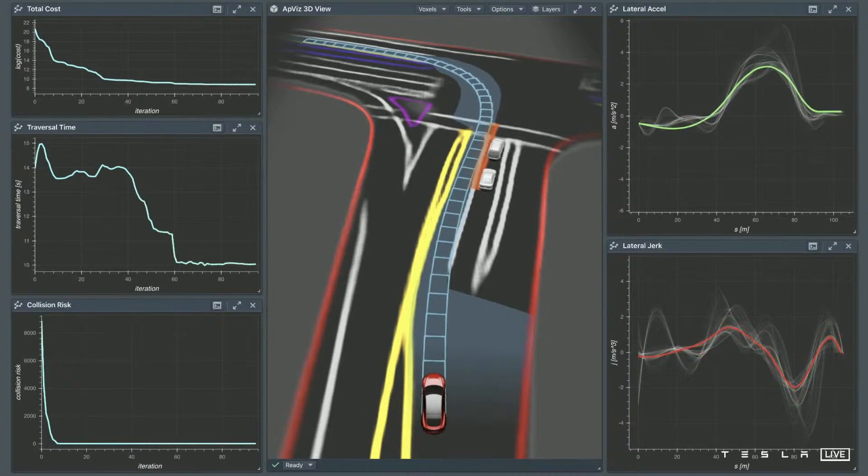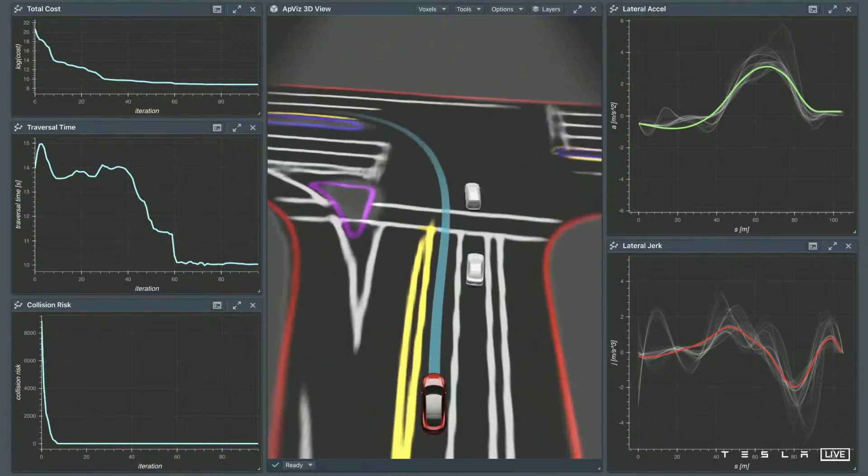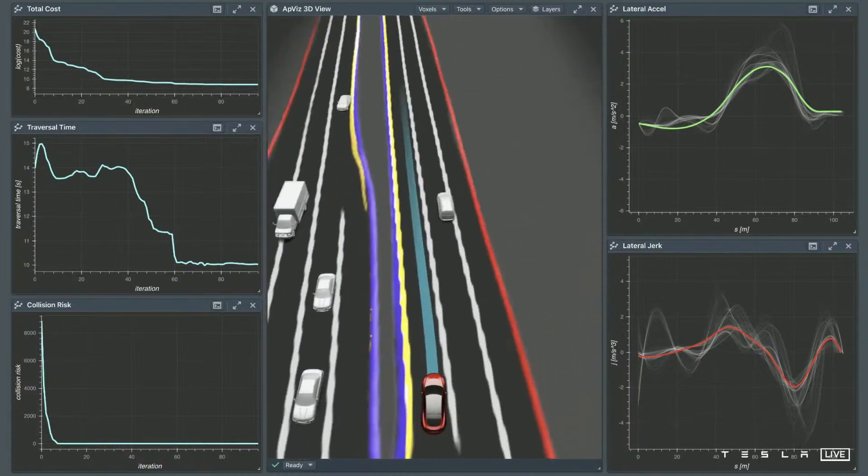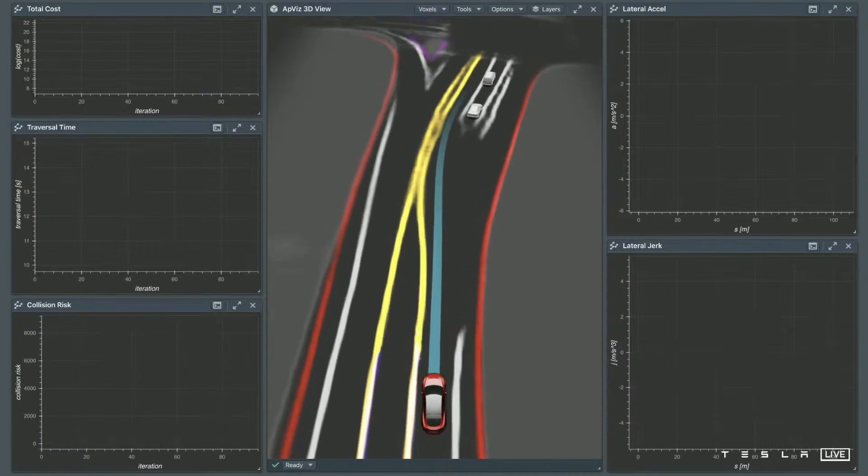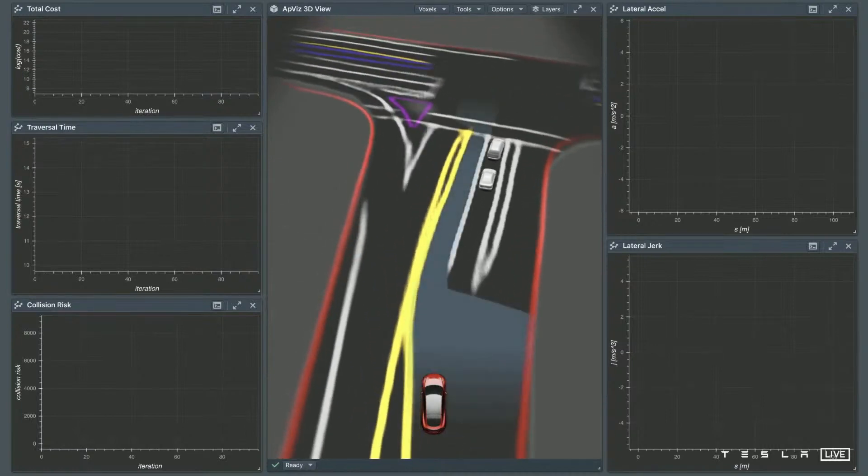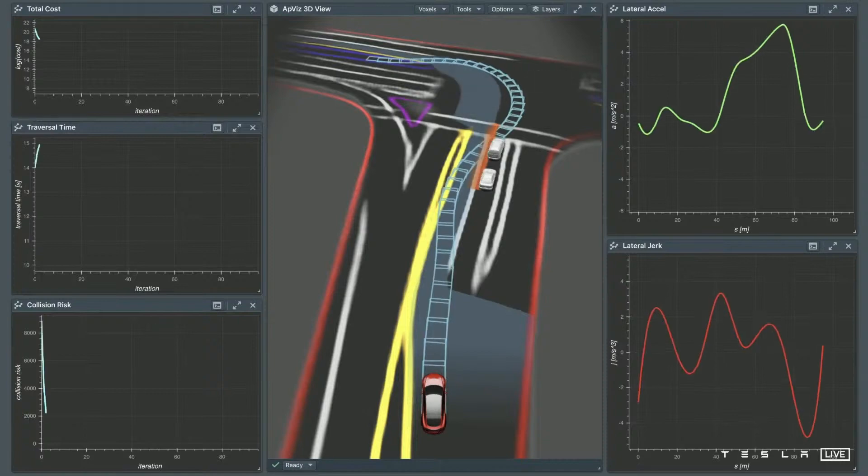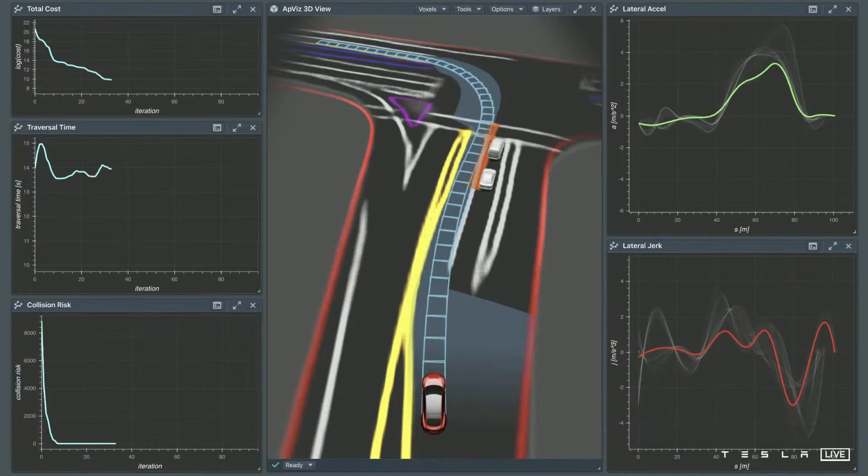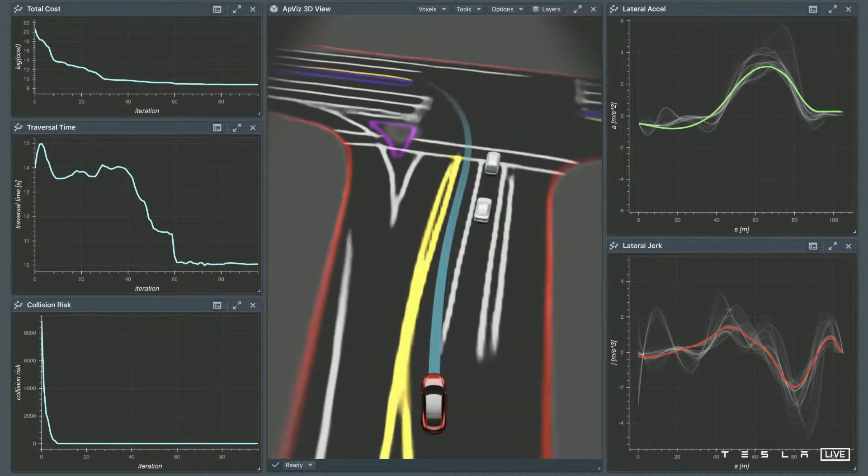And you can see that the optimization continuously makes fine-grained changes to reduce all of its costs. Some of the costs, for example, are distance from obstacles, traversal time, and comfort. For comfort, you can see that the lateral acceleration plots on the right have nice trapezoidal shapes. It's going to come up, yeah, here on the right side, the green plot. That's a nice trapezoidal shape. And if you record a human trajectory, this is pretty much how it would look like. The lateral jerk is also minimized.